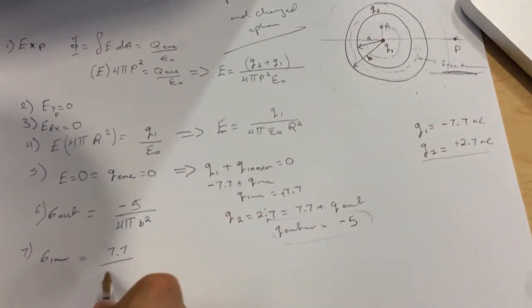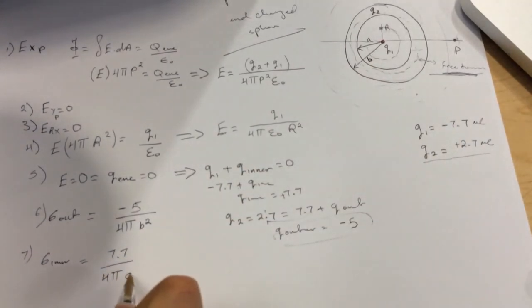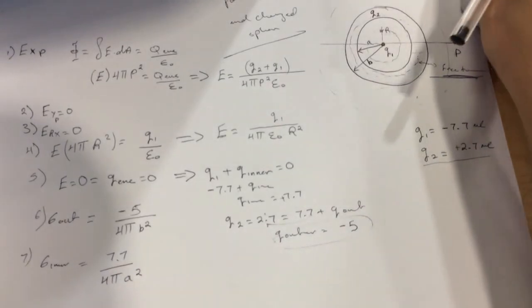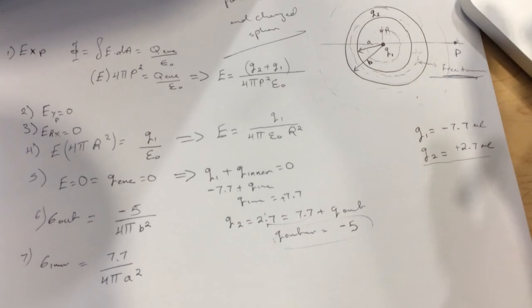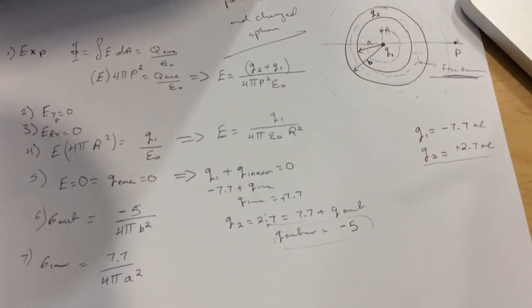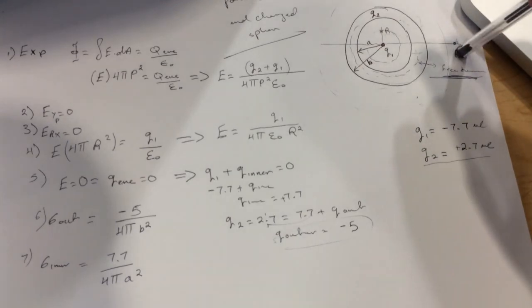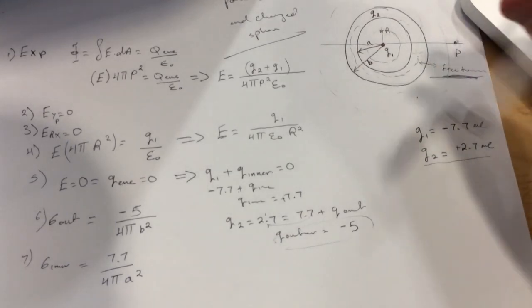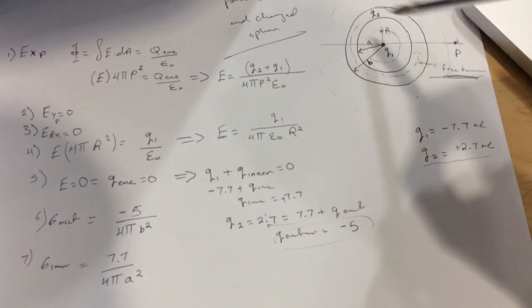For x equals infinity, there would be no point where the electric field in the x-direction will be zero on the x-axis.